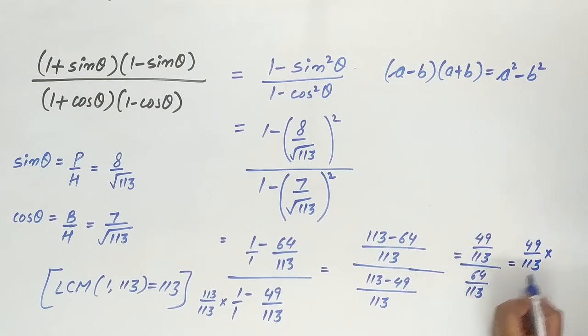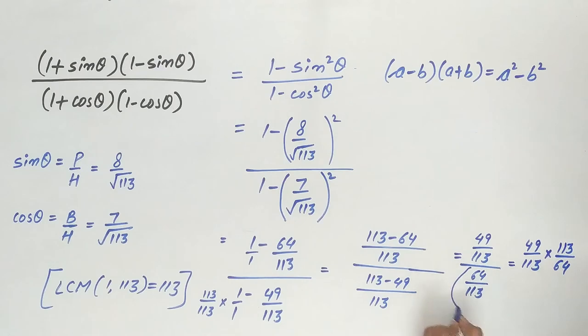So, 49 divided by 113 divided by 64 by 113. So, 49 divided by 64.